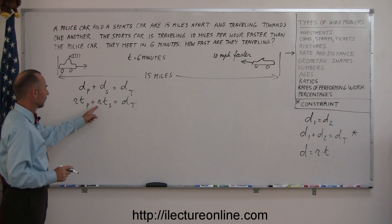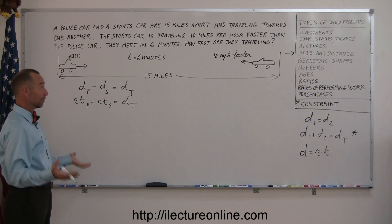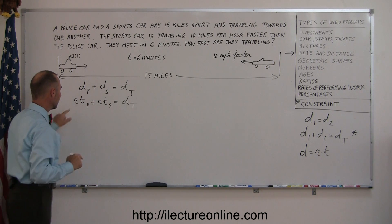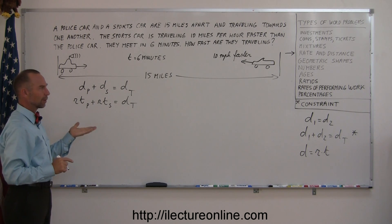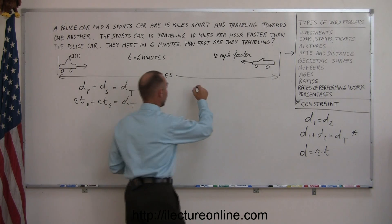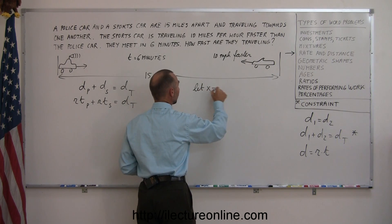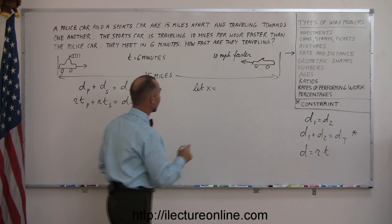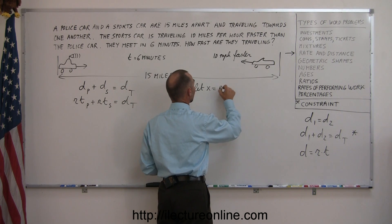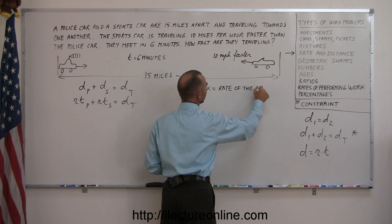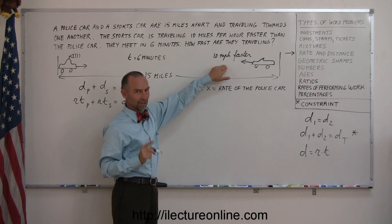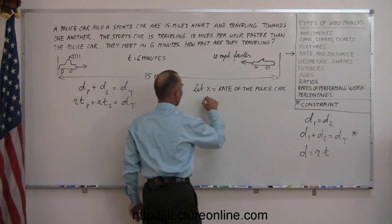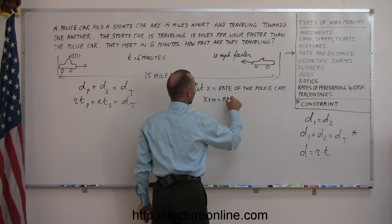Now, do we know their rates? We do know their times because it's the same for both. They're six minutes each, so I can put six in each of these. But what are the rates? All I know is that the sports car travels 10 miles per hour faster than the police car. So let X equal the rate of the slowest car, in this case the police car. So let X equal the rate of the police car. And since the sports car travels 10 miles per hour faster, you let X plus 10 equal the rate of the sports car.